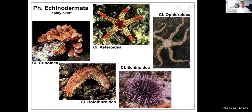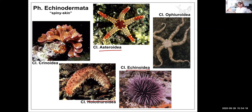Echinodermata means spiny skin. There are many different classes. The ones I'd like to look at today are the Asteroidea, the Echinoidea, and the Holothuroidea. I'm not going to look at the Brittle Stars or the Crinoids today, because you can only do so much.